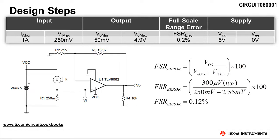Now let's check the full scale range error. The full scale range error is calculated by dividing the offset voltage of the amplifier by the shunt voltage range and multiplying by 100. The minimum shunt voltage is 10.2 milliamps times 250 milliohms, which is 2.55 millivolts. Using the typical offset voltage of the TLV9062, this yields a full scale range error of just 0.12%.